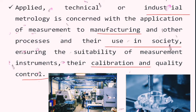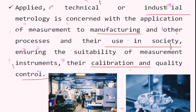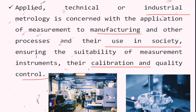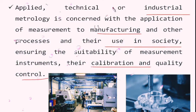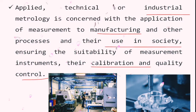Industrial metrology also covers the calibration and quality control of instruments. Before conducting any test, you have to confirm whether the instrument is suitable for the particular process. You must follow the given norms and procedures to obtain exact results from the experiments.